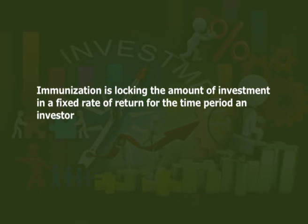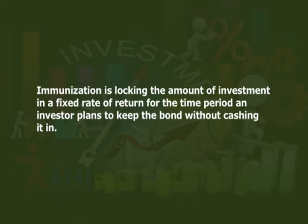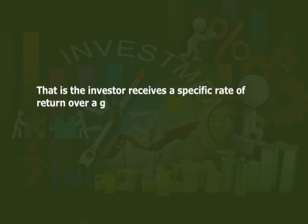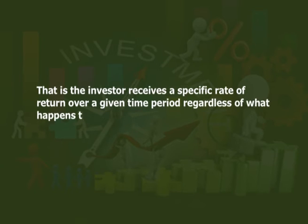We have learned previously that interest rates affect bond prices inversely — when interest rates rise, bond prices drop. This is not the case when a bond portfolio is immunized, meaning the investor receives a specific rate of return over a given period of time regardless of what happens to interest rates during that time. In other words, the bond is immune to fluctuations in interest rates. For immunization, the investor needs to know the duration of the bonds and thus adjust the portfolio so that the duration equals the investment time horizon.